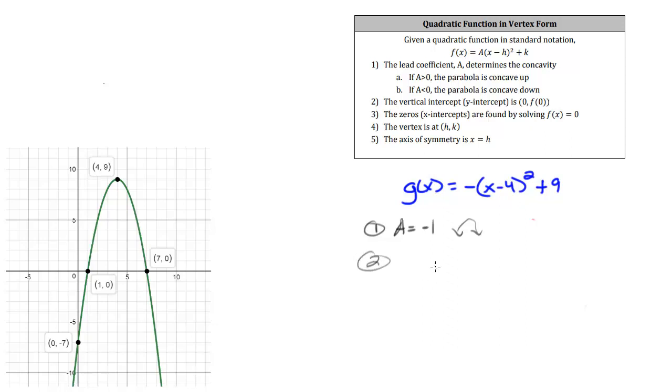Second, we want to find the y-intercept. The y-intercept is at zero comma f of zero, meaning the y-intercept is what we get when we plug in zero to our function. And all we need to do is plug in zero to the function up here. So I have g of zero. I get negative, zero minus 4 squared plus 9, which will give me negative 16 plus 9, which gives me negative 7. So there I have a vertical intercept of zero comma negative 7. Again, if you think about standard form, that takes a little bit more work because you actually have to plug in the zero, but it doesn't take too long to actually compute that.